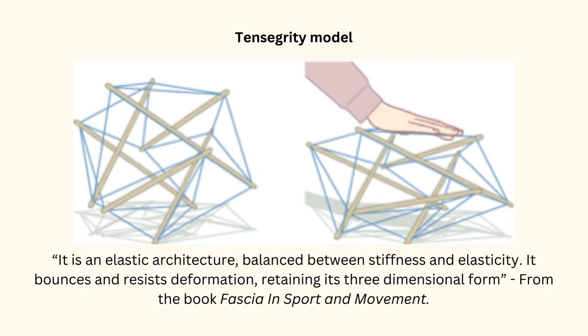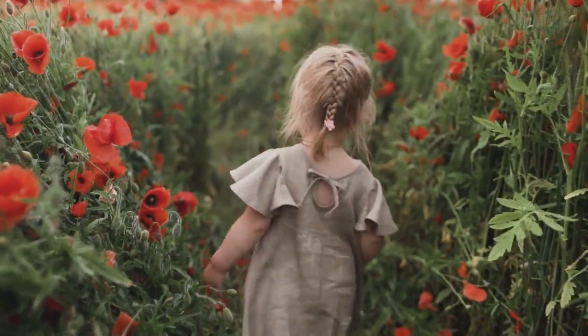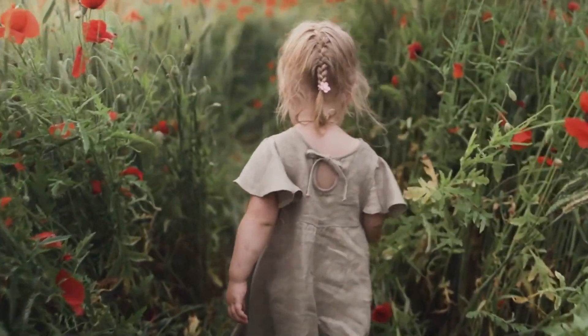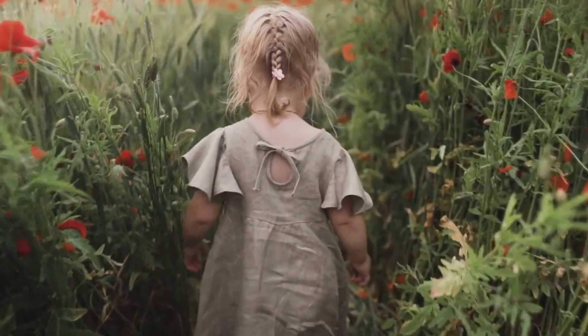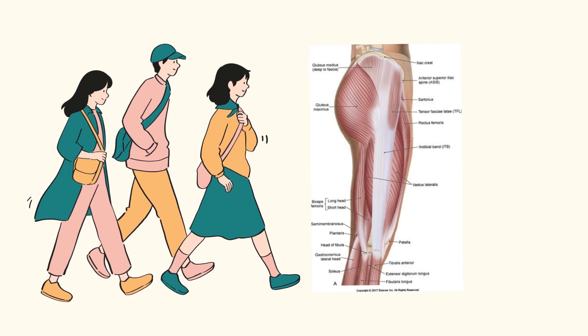But why go too far with our examples when we can just mention walking — a fundamental human movement which highlights the significance of fascial structures. The dense fascia lata stabilizes the hip during walking, running, and hopping, while passive resting tension within the myofascial system helps us with postural stability.